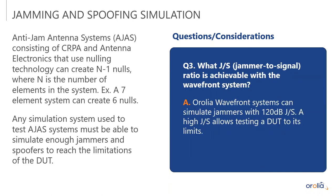What is the jammer-to-signal ratio achievable with the wavefront system? The Arolia wavefront systems can achieve 120 dB J/S — the jammer-to-signal ratio — so greater than 110 dB in any case. We need that high J/S to be able to test the device under test to its limits — that's important when testing anything, we want to be able to push it to its limits and see what happens.